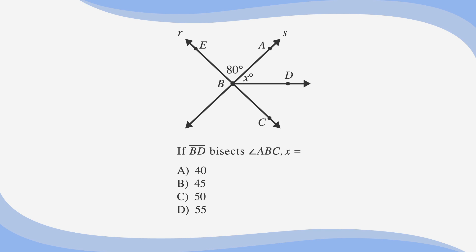If BD bisects angle ABC, x equals... Our answer choices are A, 40, B, 45, C, 50, and D, 55. Let's underline the fact and circle the key word. We need to find the measure of angle x, so we'll label our answer choices as value of angle x.